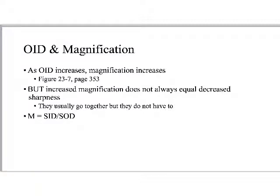Magnification equals SID over SOD. Relative sharpness is SOD over OID, and magnification is SID over SOD — so pay attention to each one of these separately. One reason for this lecture at this point in our trimester is to ground us as we're in the lab doing digital technique charts. It's important to be calculating and measuring things like the SID, the separation, the part thickness, and having in the back of your mind how that influences the OID and the source-to-object distance, because all of those have bearing on the images we produce.